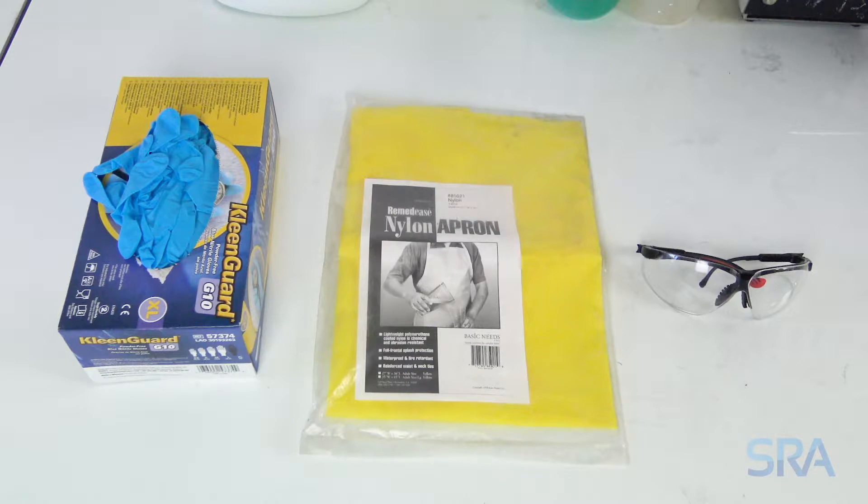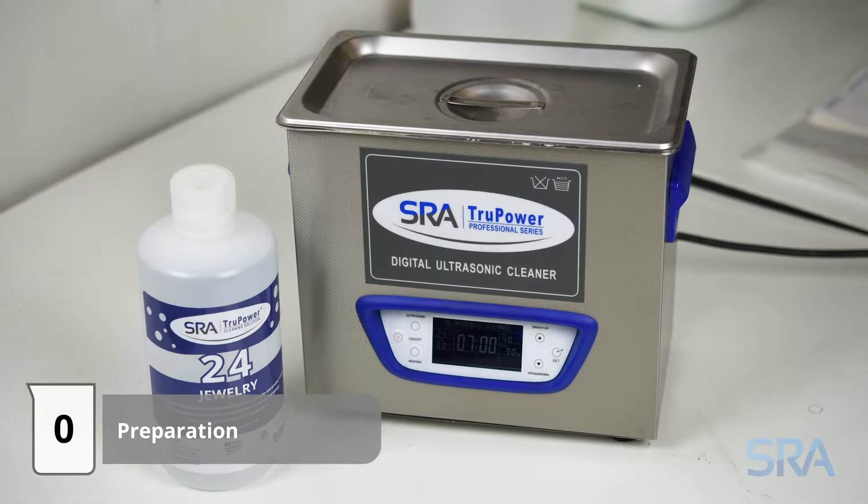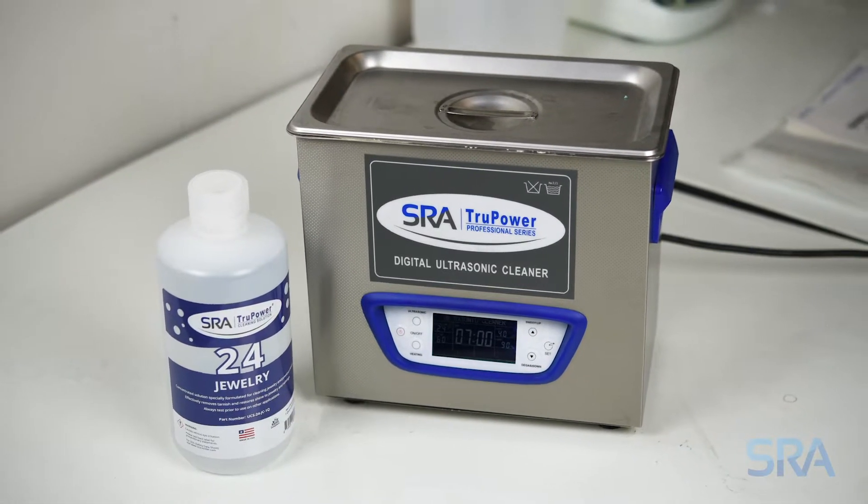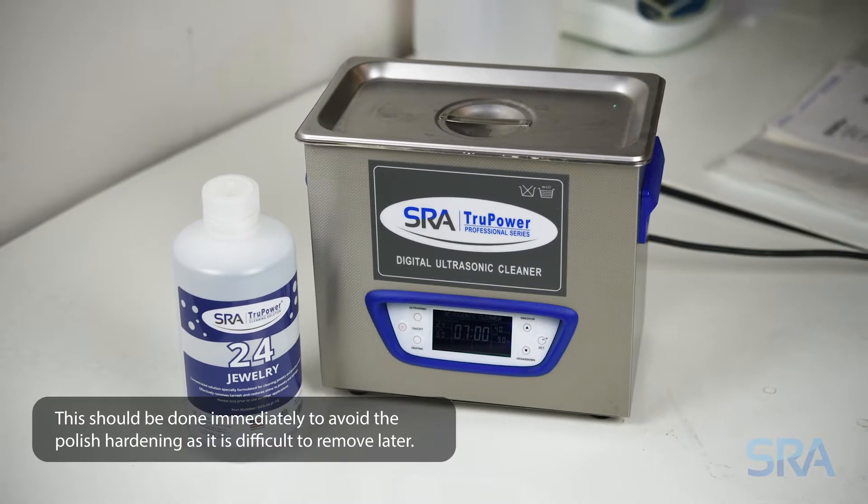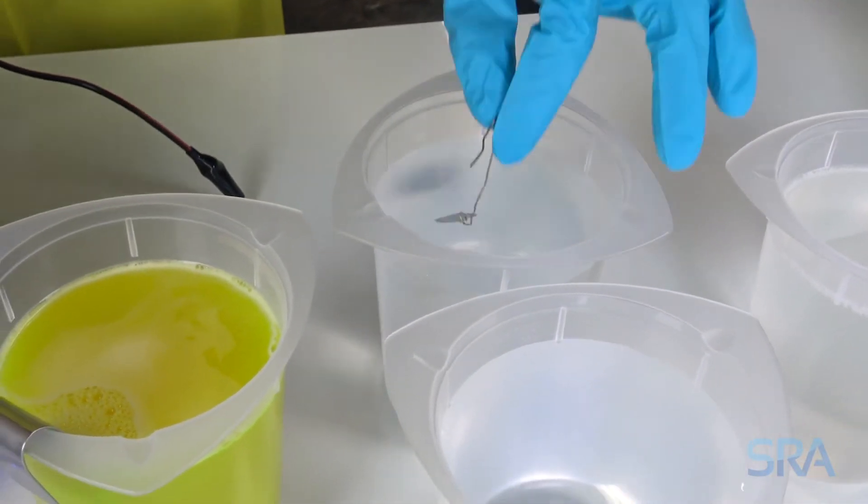For repair items or badly oxidized pieces, you'll want to start with polishing and then cleaning in an ultrasonic cleaner. Once clean, rinse in distilled water. For new items, you can usually go straight to the electro cleaner.